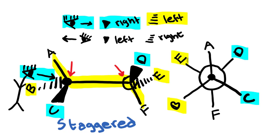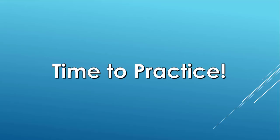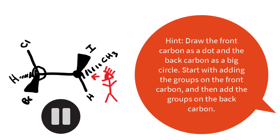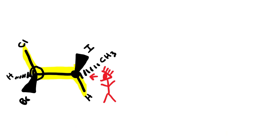That's another way you can approach this if you have a hard time visualizing. I would still try to develop the visualization skill, because it helps with stereochemistry and other topics in the course. Now let's go ahead and try to draw the Newman projection for this new molecule — go ahead and pause the video, and then you can check your work. First, I've highlighted the backbone to confirm we're looking at a staggered conformation, then marked the front carbon with a dot and the back carbon with a big circle.